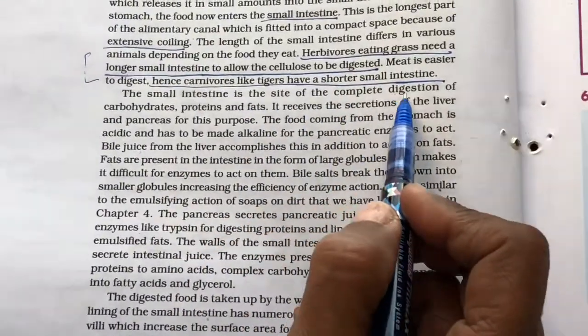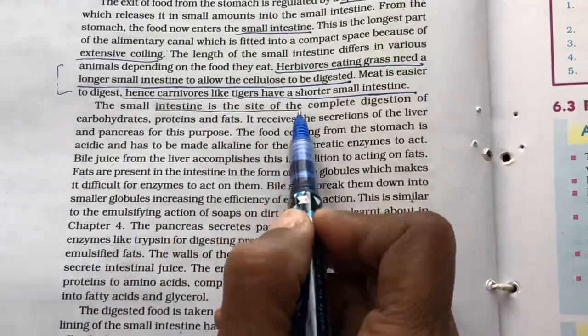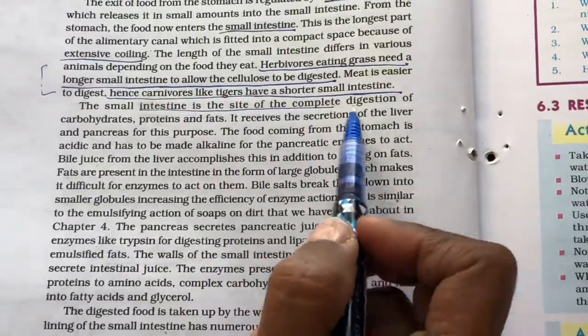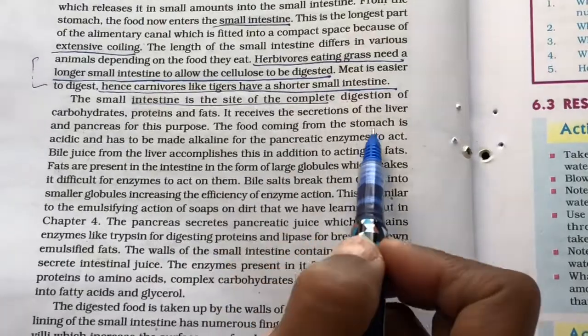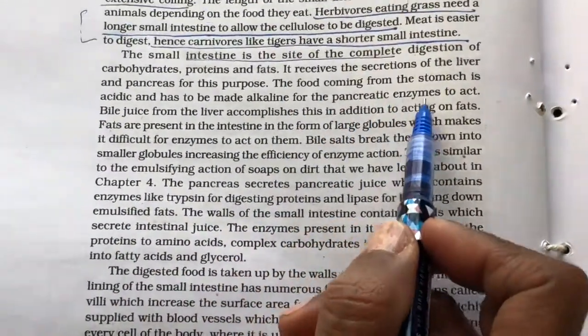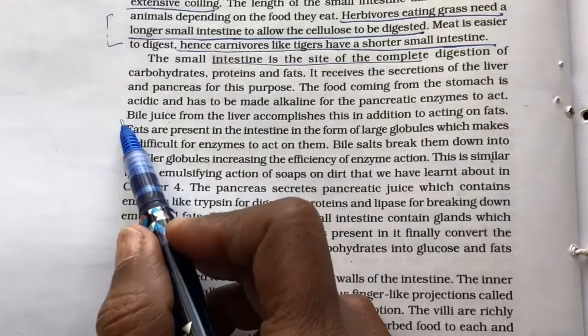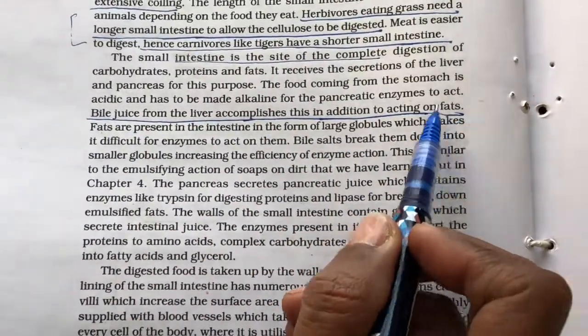The small intestine is the site of complete digestion of the carbohydrates, proteins, and fats. It receives the secretions of the liver and the pancreas for this purpose. The food coming from the stomach is acidic and has to be made alkaline for the pancreatic enzymes to act. Bile juice from the liver accomplishes this in addition to acting on fats.